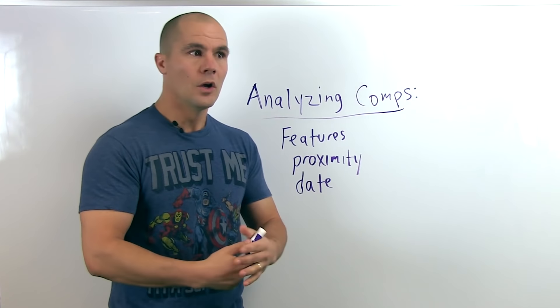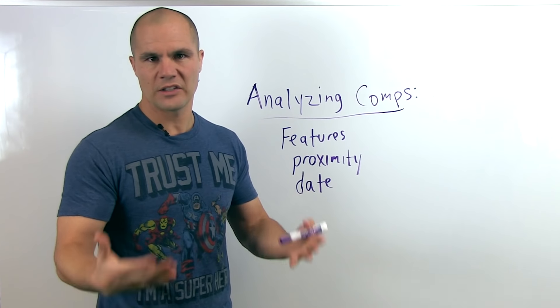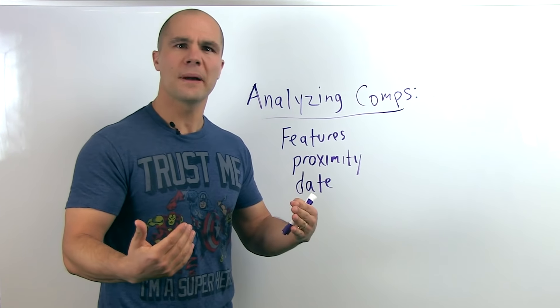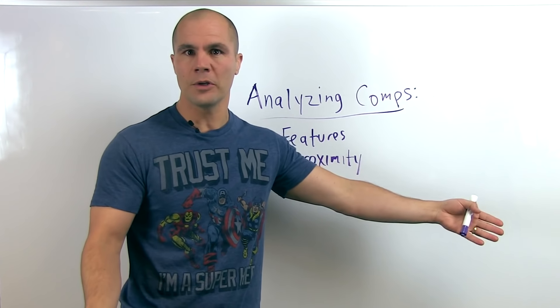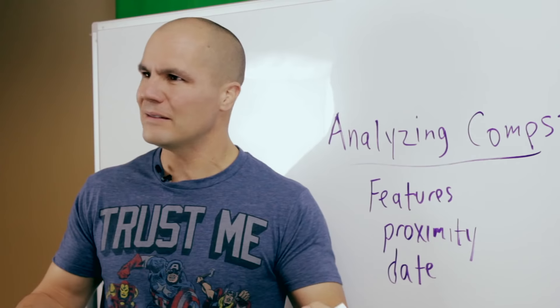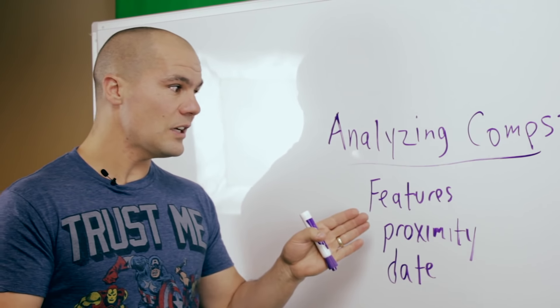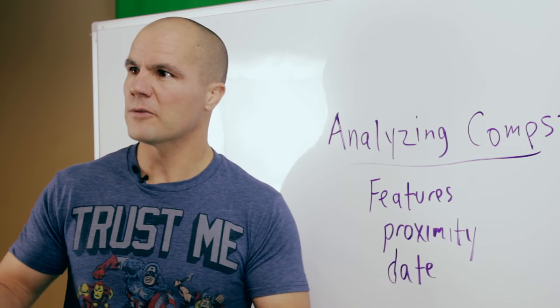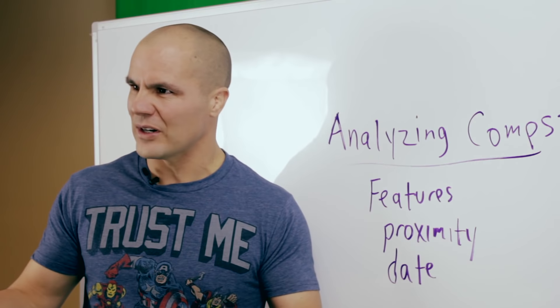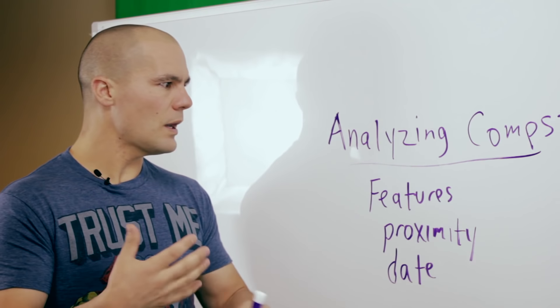So for example, if we're looking at a thousand square foot ranch as our subject property, we wouldn't compare that with a two thousand square foot colonial, right? They're totally different, not related, not closely related enough anyway. So we want to stick with similar. We don't compare four bedrooms with two bedrooms; they're different, right? So we want to make sure that we're similar.